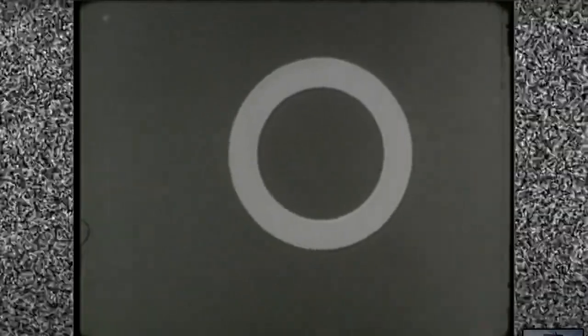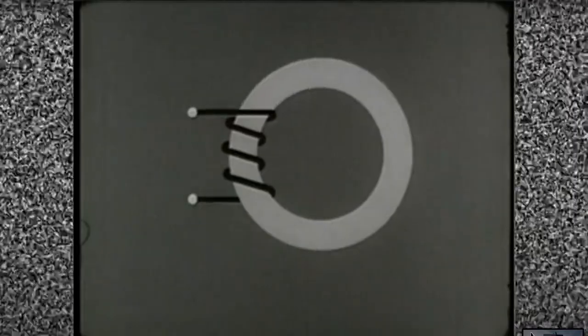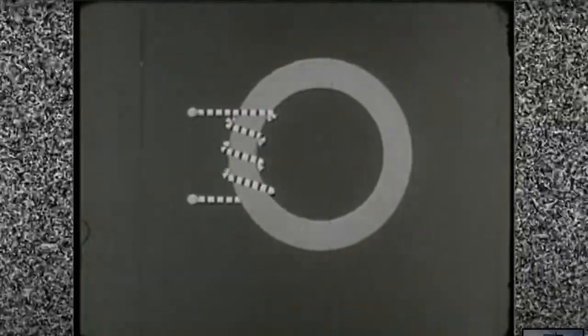To explain how cores store binary digits we must know how they are constructed. Around the core is wrapped a conductor. Current flowing through the winding produces a magnetic field around the conductor.